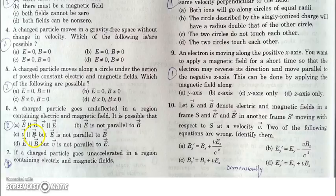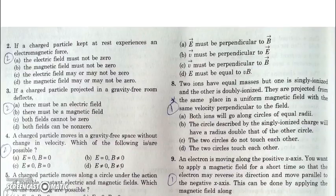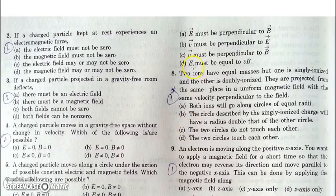In the third part, v is parallel to B but E is not parallel to B. If v is parallel to B, magnetic force will be zero, but if E is not parallel to B there will be an electric force which will deviate the particle. In the next part, E is parallel to B but v is not parallel to E. As v is not parallel to E it will try to deviate the particle, and since E is parallel to B these forces will not be able to cancel each other, hence deviation will occur. If a charged particle goes unaccelerated in a region containing electric and magnetic field, the net force on it must be zero, requiring E = -v × B.